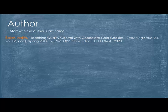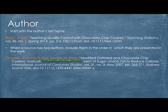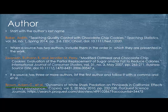First you start with the author. Put the author's last name first, then comma, then their first name. When a source has two authors, include them in the order in which they are presented in the work — the first author's last name first, comma, first name, then 'and,' and the second author will be first name first, then last name. If a source has three or more authors, list the first author and follow it with a comma and 'et al,' which means 'and others.'